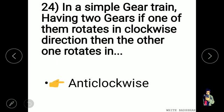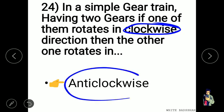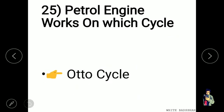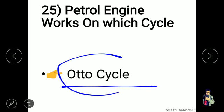In a simple gear train having two gears, if one rotates in the clockwise direction, the other rotates in the anticlockwise direction. A petrol engine works on the Otto cycle.